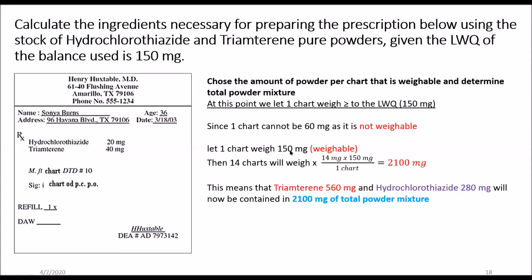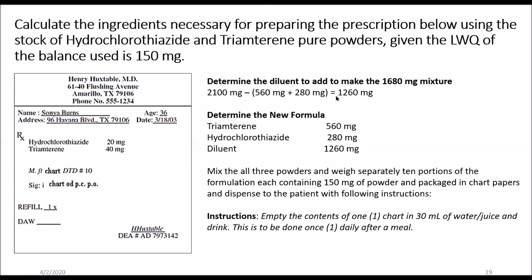If one chart contains 150 milligrams of powder, then 14 charts will contain 2,100 milligrams of total powder mixture. This 2,100 milligrams contains the 560 mg of triamterene, 280 mg of hydrochlorothiazide, plus an unknown amount of diluent. To find the diluent: 2,100 − (560 + 280) = 1,260 milligrams of diluent. So the new formula is: 560 mg triamterene, 280 mg hydrochlorothiazide, and 1,260 mg of diluent.